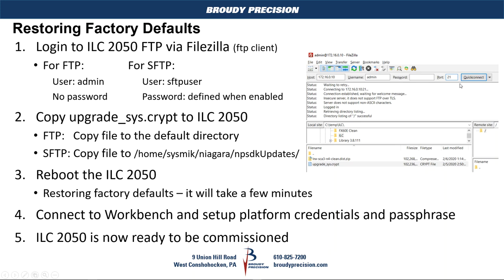The FTP port is 21. Once you log in with FTP, you'll find only one root directory with no subfolders — that is where you copy the .crypt file. If you've enabled SFTP, you'll find various folders on the controller side, and the file gets copied to home/sysmic/niagara/npsdk/updates folder. Once you've copied the file over to the ILC 2050, do a reboot: go back into PuTTY, select reboot from the menu, and allow it to reboot.